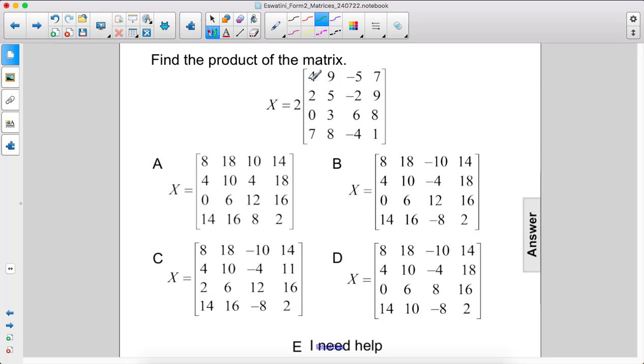So for example, 2 times 4 is 8, which means the number in the top left corner should be 8. However, it's 8 in every single answer, so that doesn't help us eliminate any.